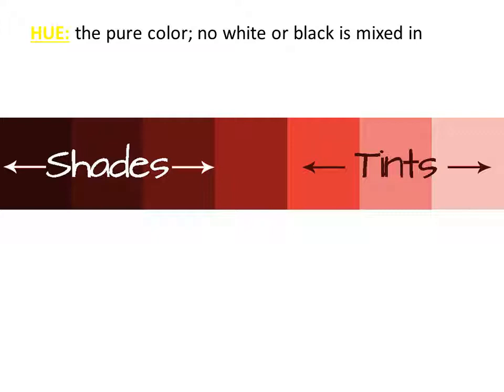Now if you add white into the pure colors, it's considered desaturated. It's not as bright as it once was because you added white into it. If you decide to add black into your hue, you dulled your color down in a different way — it's darker, but also duller. It's not as bright as the actual hue.